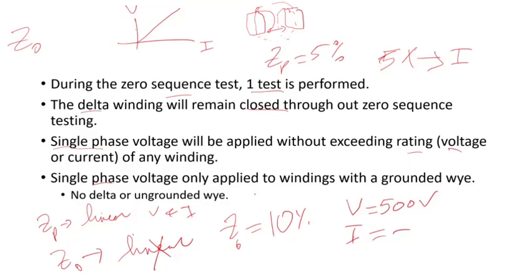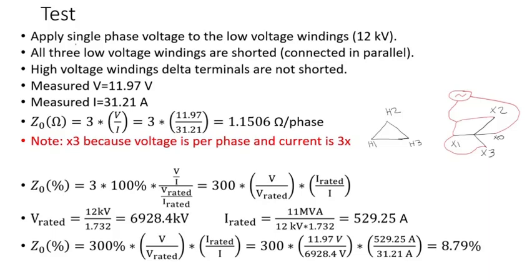Just a reminder: single phase voltage is only applied to windings with grounded Y. Since the high side is a delta, no test is applied there. Single phase voltage is applied to the low voltage (12 kV) windings; all three low voltage windings are shorted. The high voltage delta terminals are not shorted. The measured voltage is 11.97 V and the measured current is 31.21 A. Using the equation — 3 times measured voltage divided by measured current — the zero sequence impedance is 1.1506 ohms per phase.